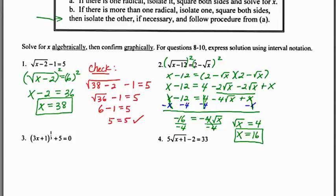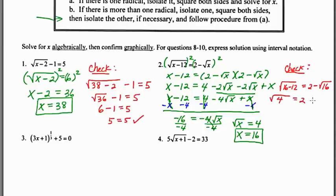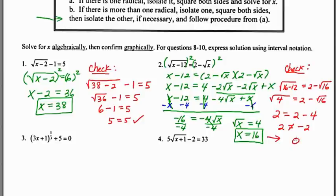It's really important to check, so plugging in x = 16: √(16−12) = 2 − √16 → √4 = 2 − 4 → 2 = −2. That doesn't check, so the answer we got algebraically doesn't satisfy the original problem. The overall answer here is no solution. This is why checking is so important.